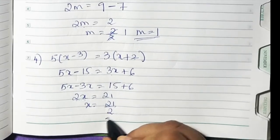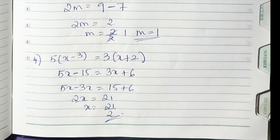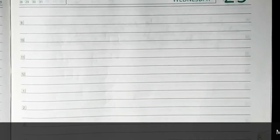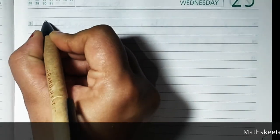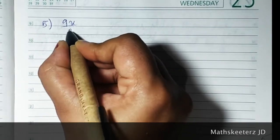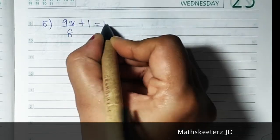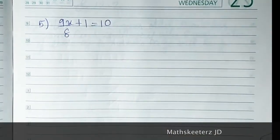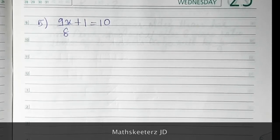You can't divide 21 by 2 further, so leave it as it is. The answer is 21 upon 2. Sum number 5: 9x upon 8 plus 1 is equal to 10.